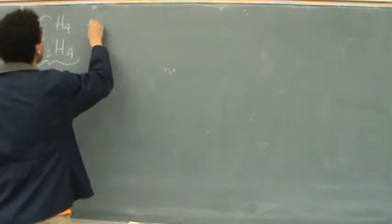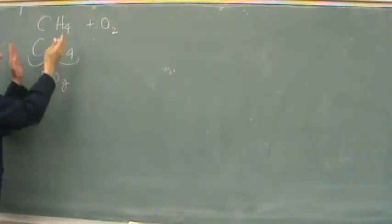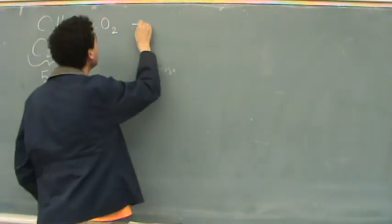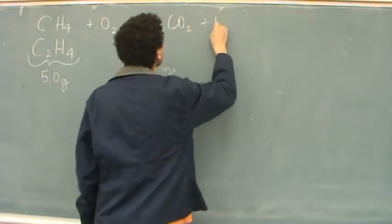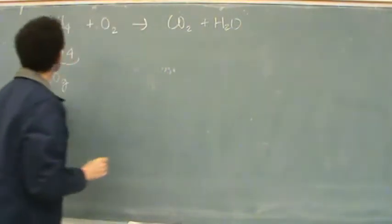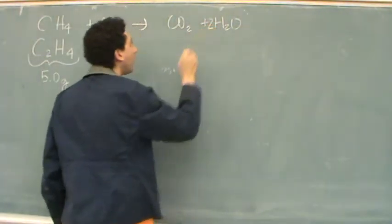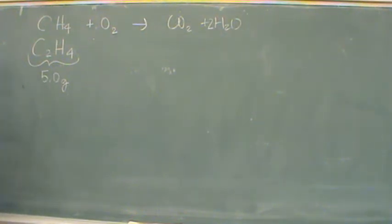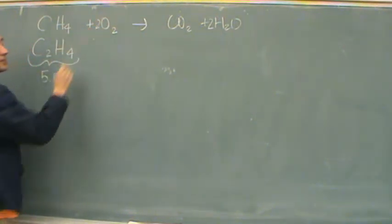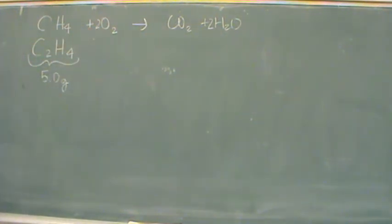So I'm going to combust. In this mixture of five grams of both of them, two combustions are happening. One is the combustion of methane. And let's balance this one. There's one carbon on each side. I need four hydrogens, and then I have one, two, three, four, so it looks like I need two of these. Does that look good?